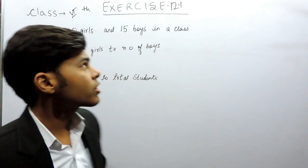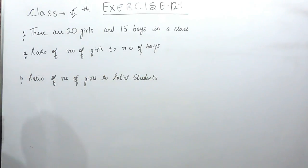Hello everyone. This is the first question of exercise 12.1 of the chapter ratio and proportion and the question says that there are 20 girls and 15 boys in a class.